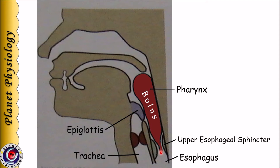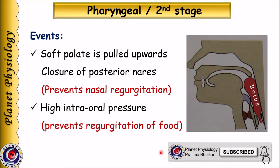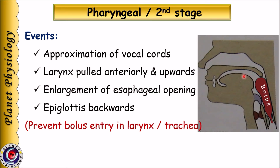The sequential coordinated contractions of muscles avoid regurgitation of bolus into the oral cavity or nasal cavity, and also prevent its entry into the larynx. As the bolus enters the pharynx, the soft palate moves upward to close the posterior nares — so nasopharynx is closed, preventing nasal regurgitation. The tongue remains elevated, creating high intraoral pressure, preventing regurgitation of food into the oral cavity.